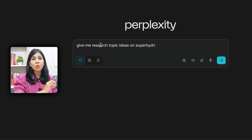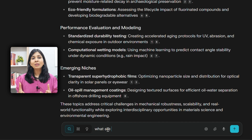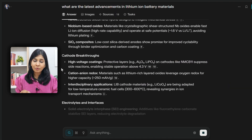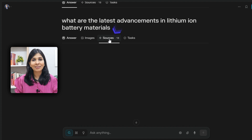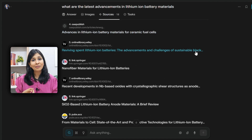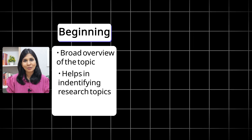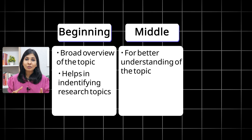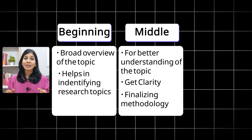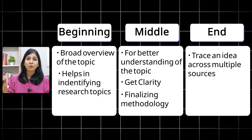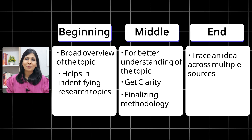For example, I can ask Perplexity: 'give me research topic ideas on super-hydrophobic coatings' or 'what are the latest advancements in lithium-ion battery materials?' Perplexity will give me not only a summary but also the sources from where it gathered the information, which I can verify, read further, or cite in my paper. Use it at the beginning for a broad overview or to identify research topics, in the middle to understand key terms or finalize methodology, and at the end to trace a particular idea across multiple sources and cite it directly.